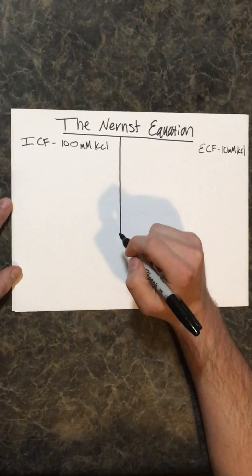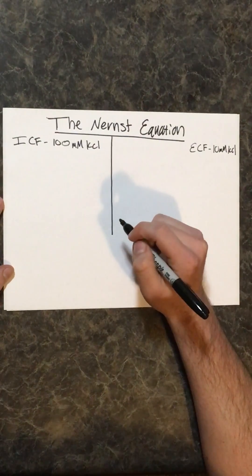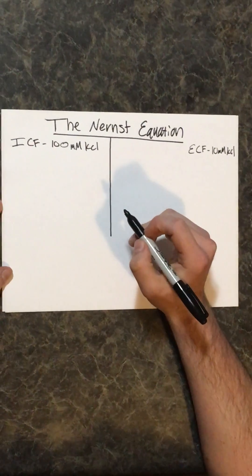Let's practice using the Nernst equation. As you can remember, the Nernst equation solves for the individual equilibrium potential of the ion that you're calculating for.